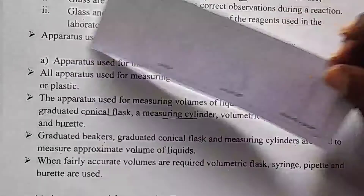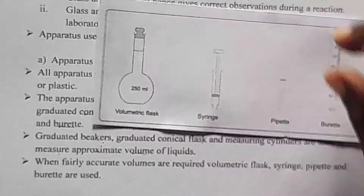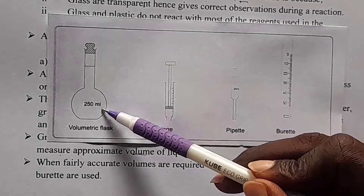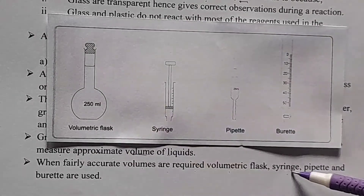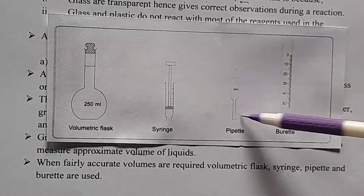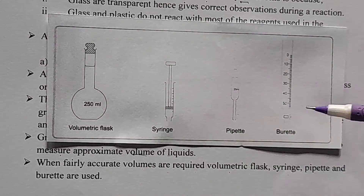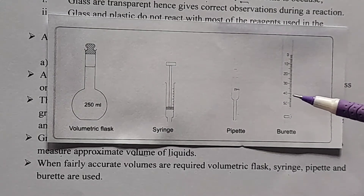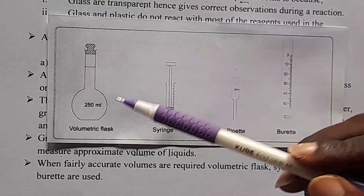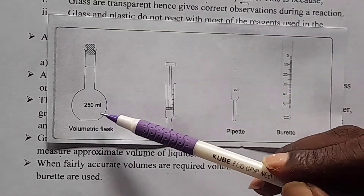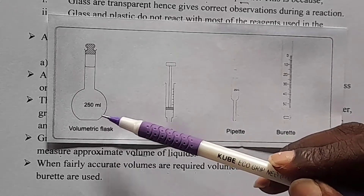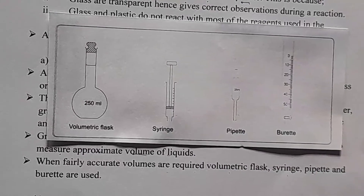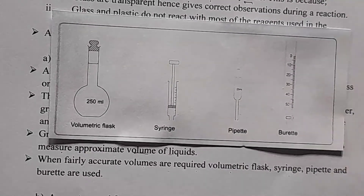For accurate measuring of volumes, we have the volumetric flask, syringe, pipette, and burette. Remember, learners, these apparatus come in different sizes. For example, this volumetric flask has a volume of 250 milliliters, but you can find volumetric flasks with 500 milliliters, 1 liter, 2 liters, or 5 liters.